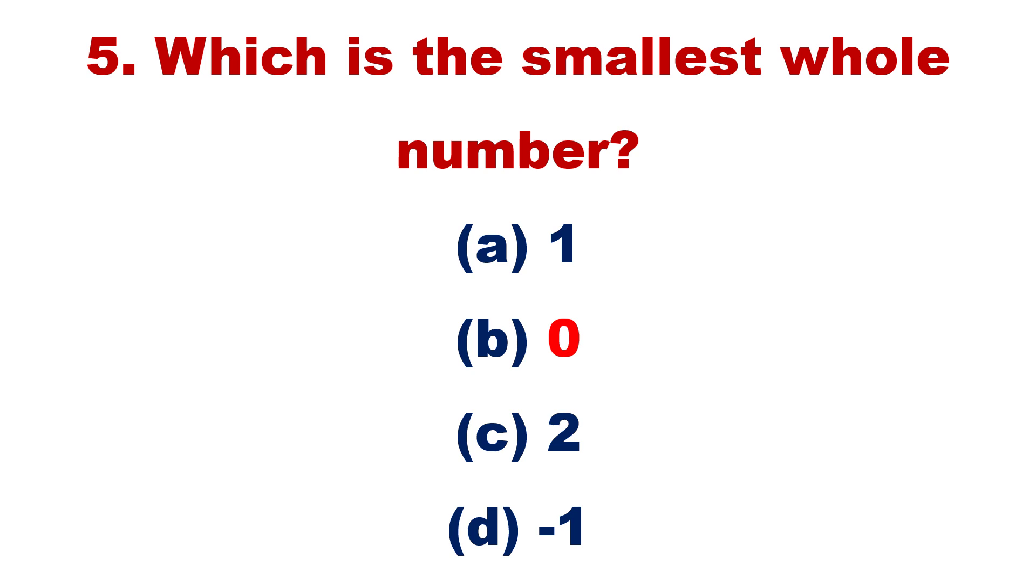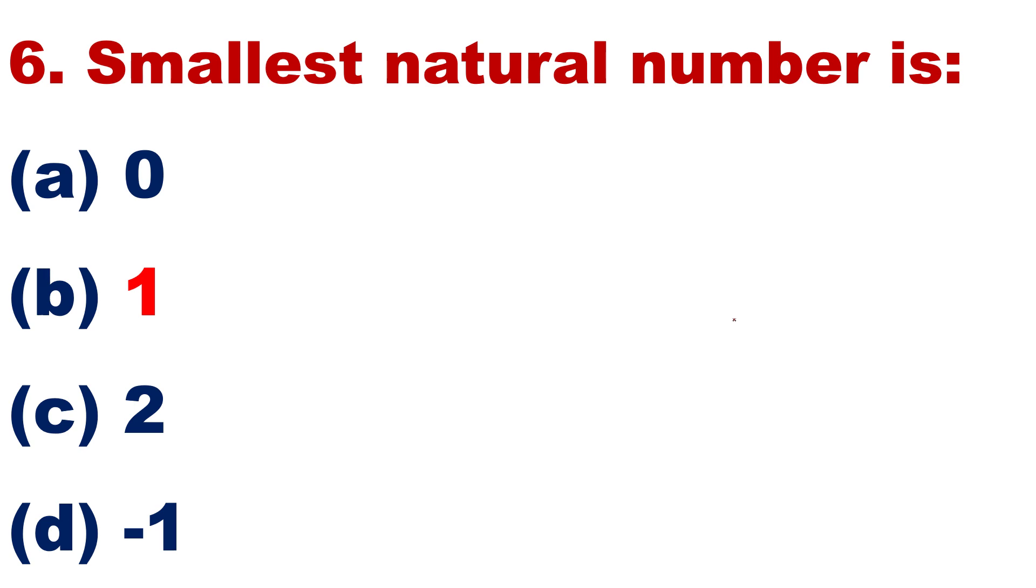Question number 6: Smallest natural number is 0, 1, 2, minus 1. Very simple. Write on the comment box.